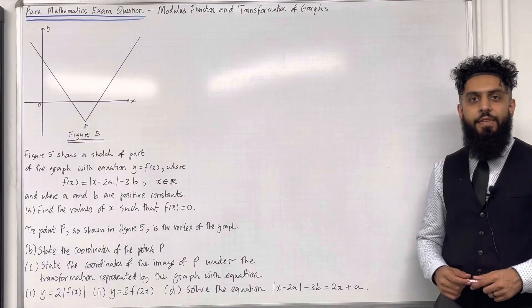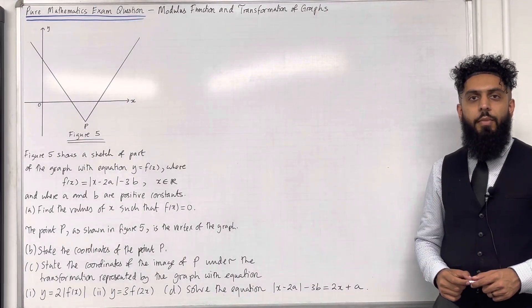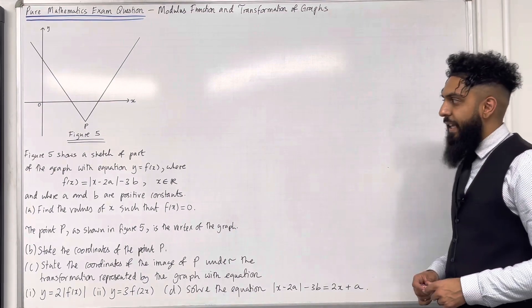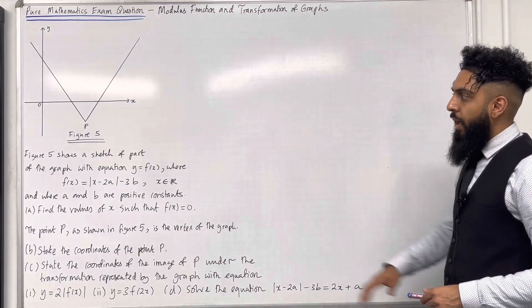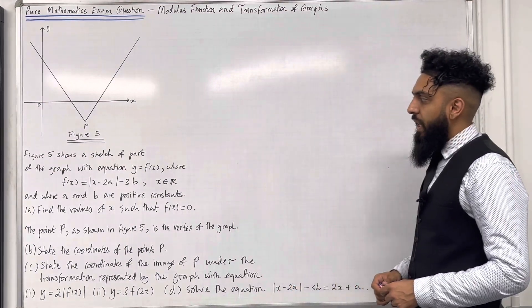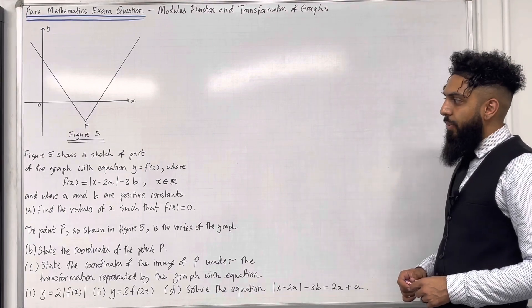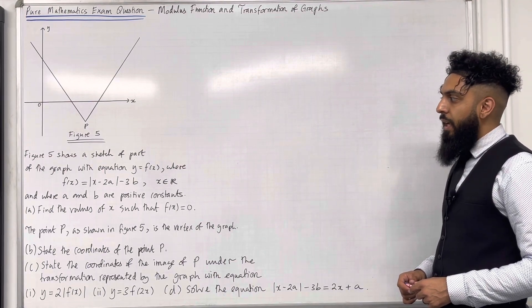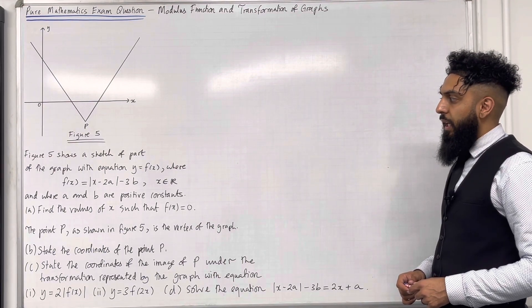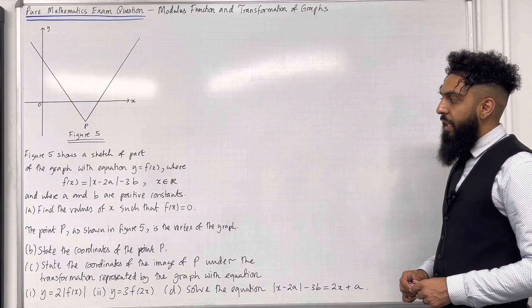Welcome back. In this YouTube video, I'm looking at a pure mathematics exam question on modulus function and transformation of graphs. Here is the exam question. Figure 5 shows a sketch of part of the graph with equation y = f(x), where f(x) = |x − 2a| − 3b, x is any real number, and where a and b are positive constants.